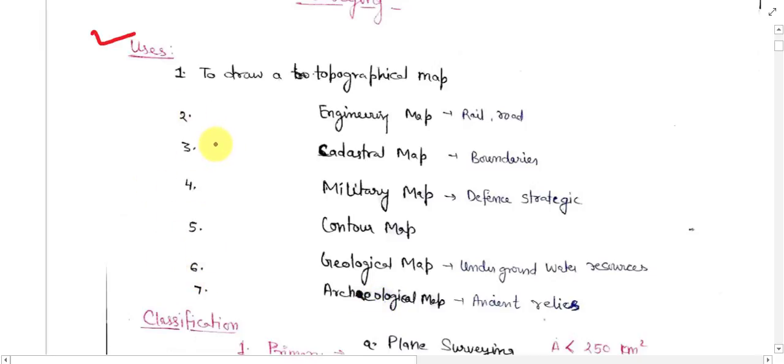There are seven types of map. We will go with one by one. Topographical map in which the top view is presented and this top view is presented with the help of some reconnaissance survey.